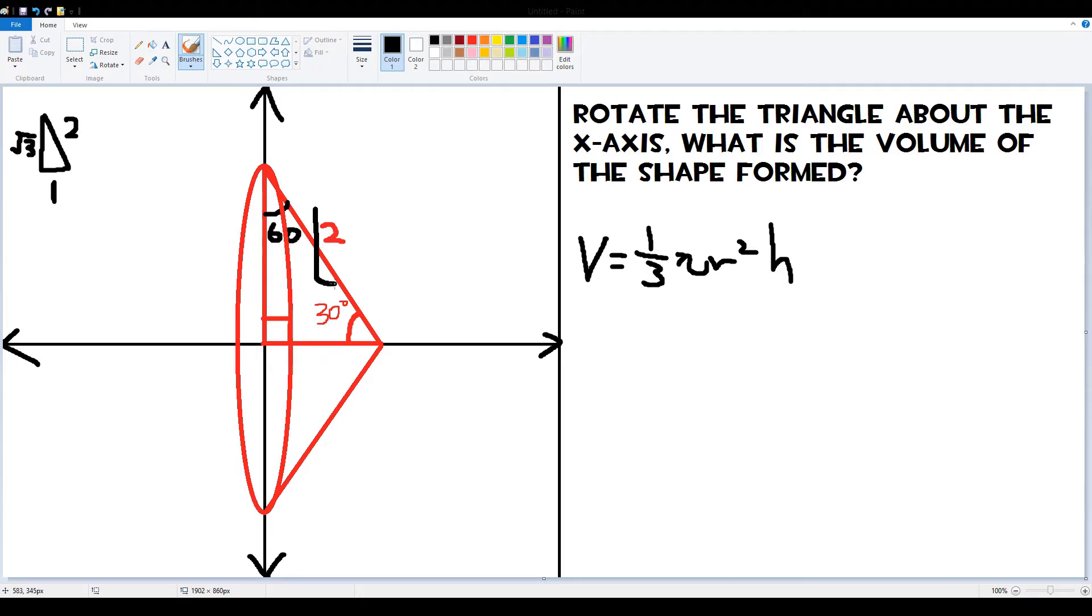And here we have our hypotenuse. So we can get the shorter side easily. Shorter side will have a length of 1. And then the other side, the other leg, will be root 3.